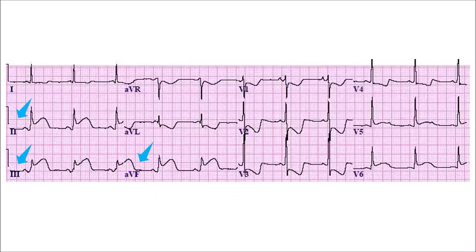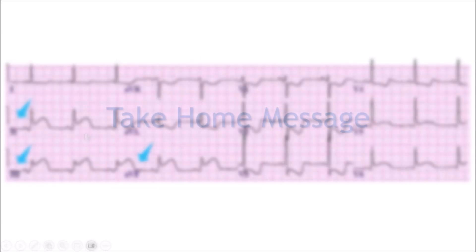ECG signs of right ventricle myocardial infarction include ST elevation in D2, D3, and AVF. So if you see ST elevation in these inferior leads, it represents right ventricle myocardial infarction due to right coronary artery obstruction.